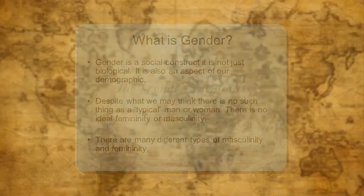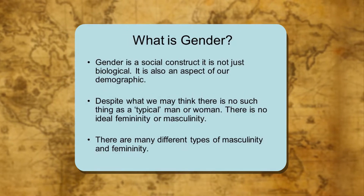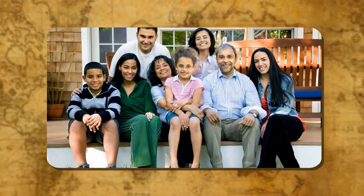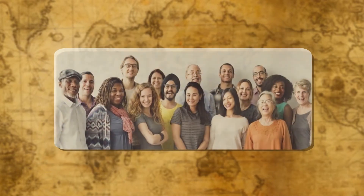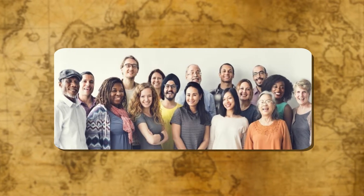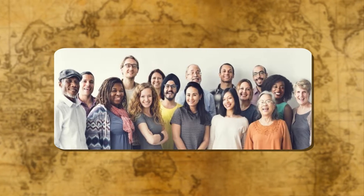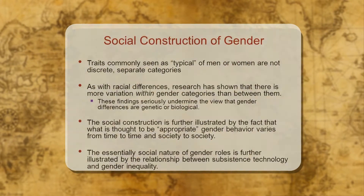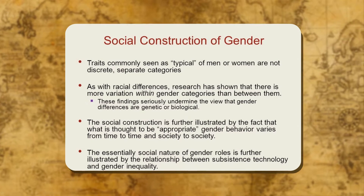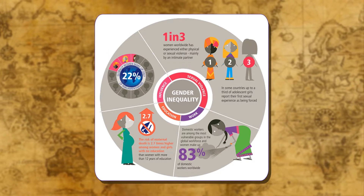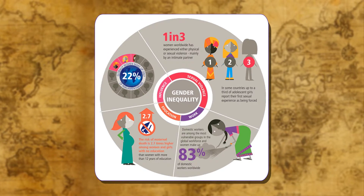Gender is a term everyone is aware of. However, its meaning is not easily understood. Our understanding of gender is often based on the family and the society that we live in. This leads us to think that the roles men and women around us play are fixed and natural. In fact, these roles differ across communities around the world. Gender is a social construct and not determined by biological differences. It is a term that helps us understand many of the inequalities and power relations between men and women in society.